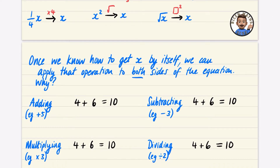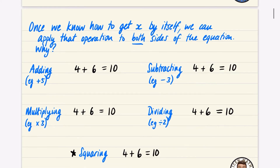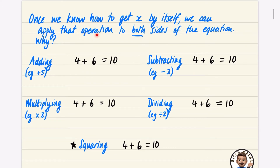Once we know how to get x by itself, we can apply that operation to both sides of the equation. Why do we have to apply the operation to both sides? When I say operation, I mean like adding, subtracting, multiplying, dividing. Here's an equation that's true: 4 plus 6 equals 10. If I wanted to keep it true by adding 5 to both sides — if I added 5 to just one side, I would have 4 plus 6 equals 15, which doesn't make sense. So you also need to plus 5 to this side, giving you 4 plus 6 plus 5, that's 15, equals 15. If you add something onto one side, you have to add it to the other side in order to keep it true.